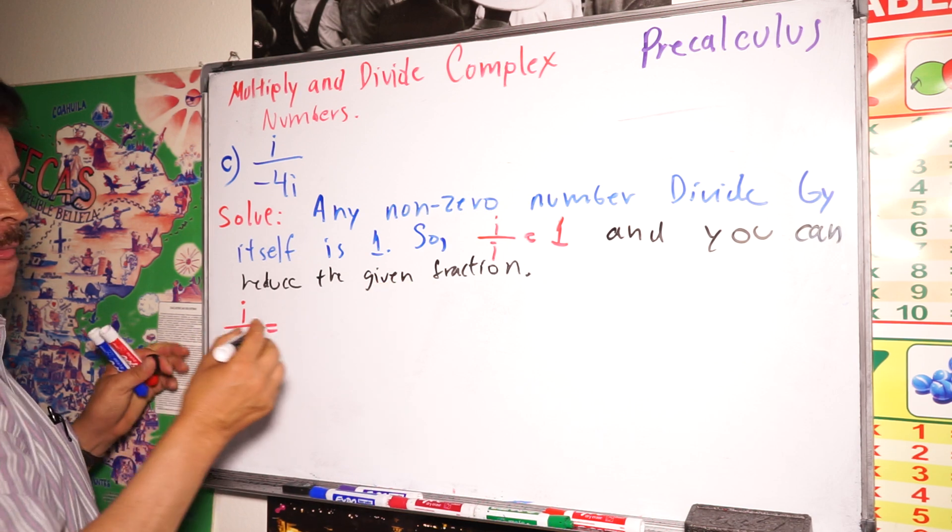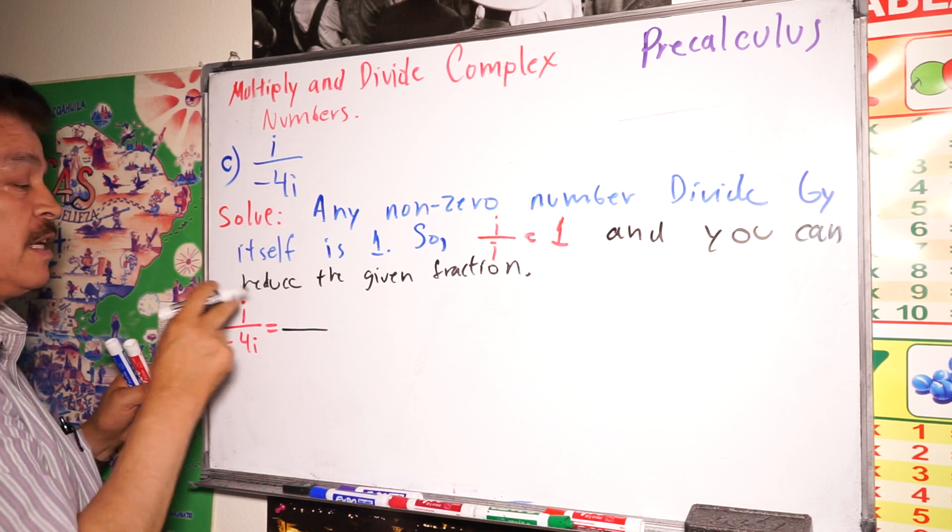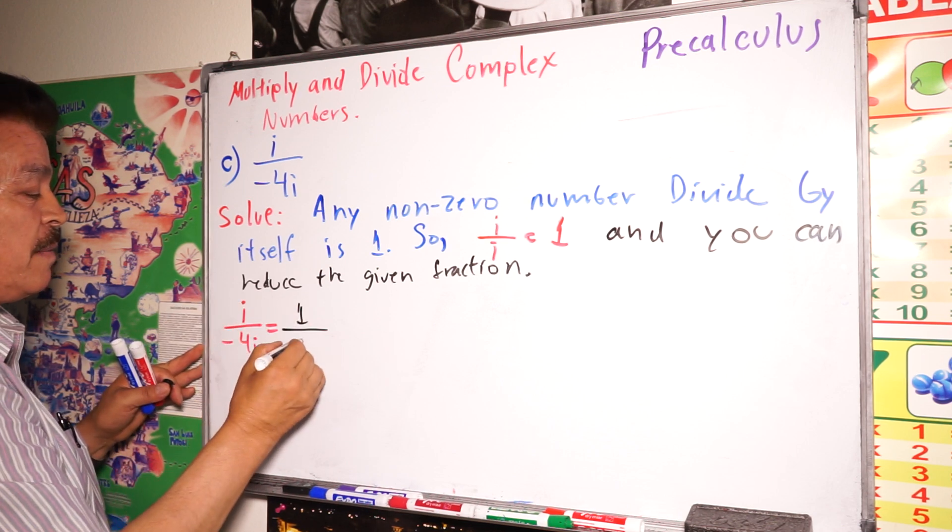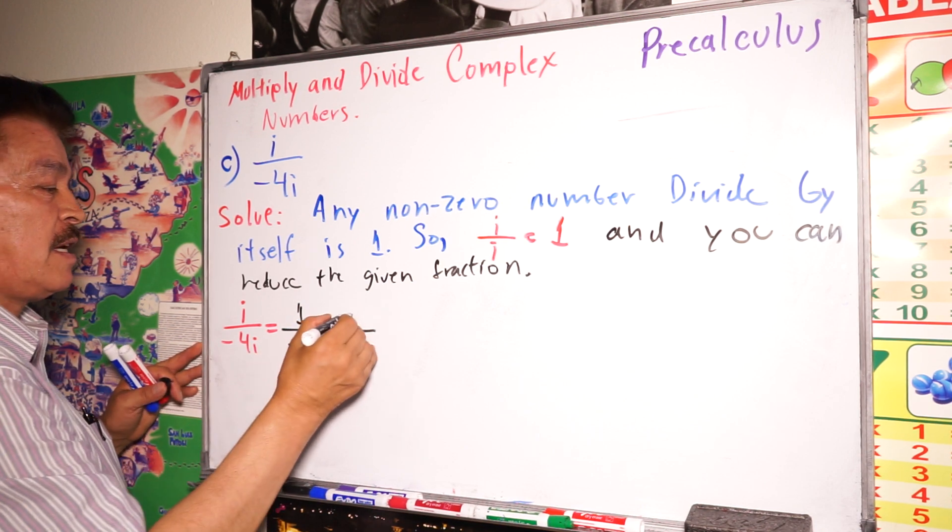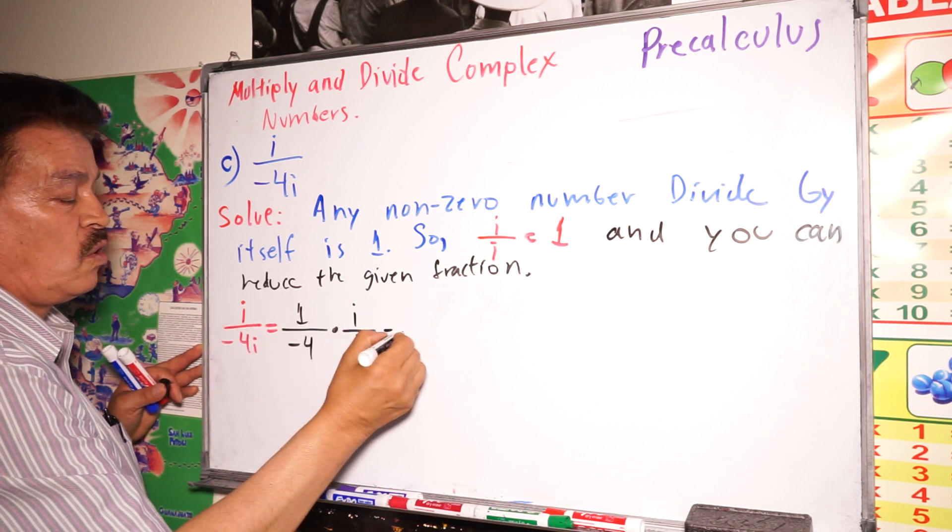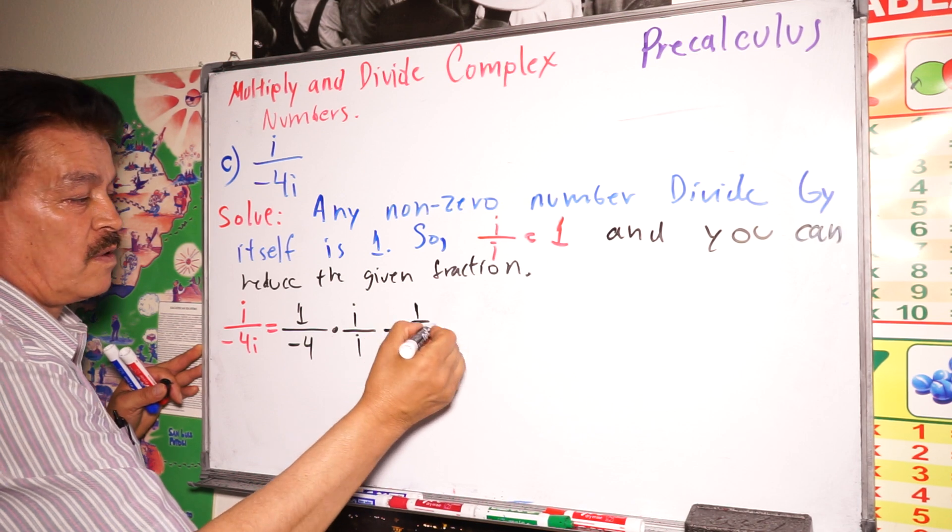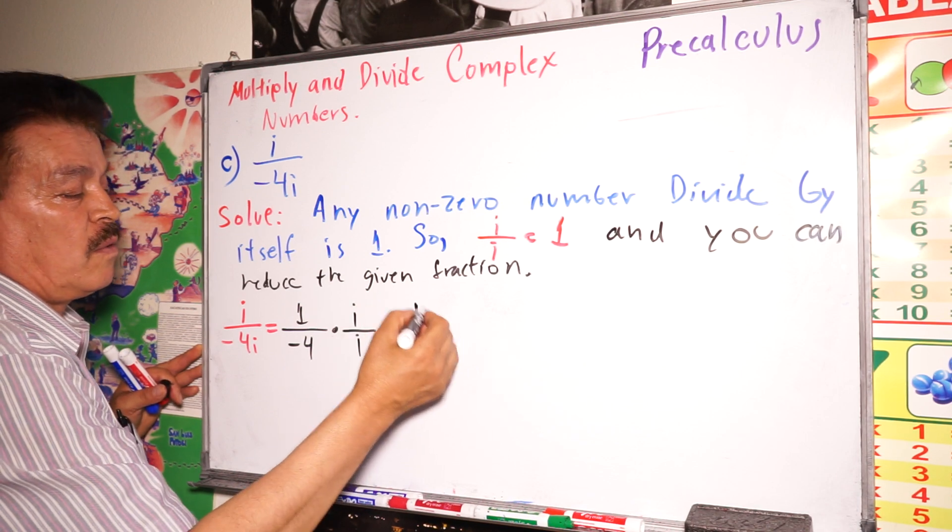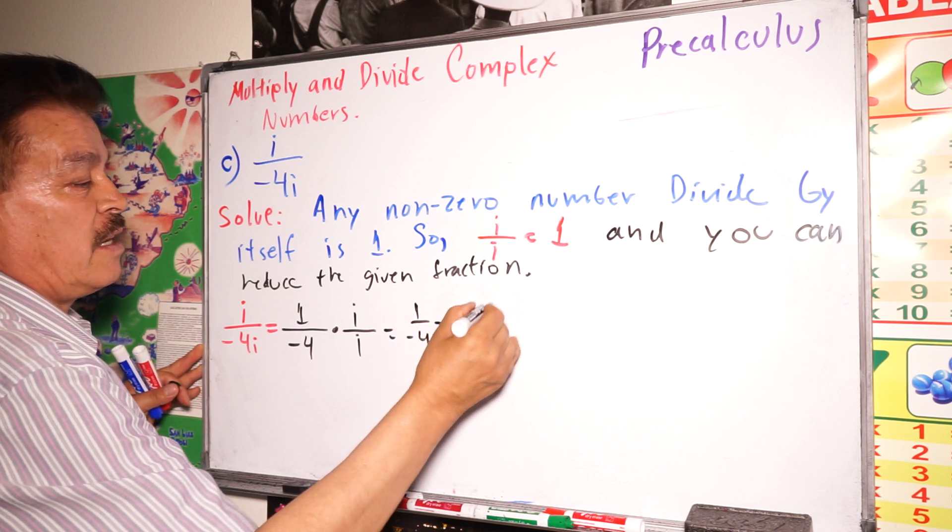Here, we have the coefficient 1 for i. 1 divided by negative 4 times i over i. Remember this little rule. This will equal 1 over negative 4, which equals negative 1 fourth.